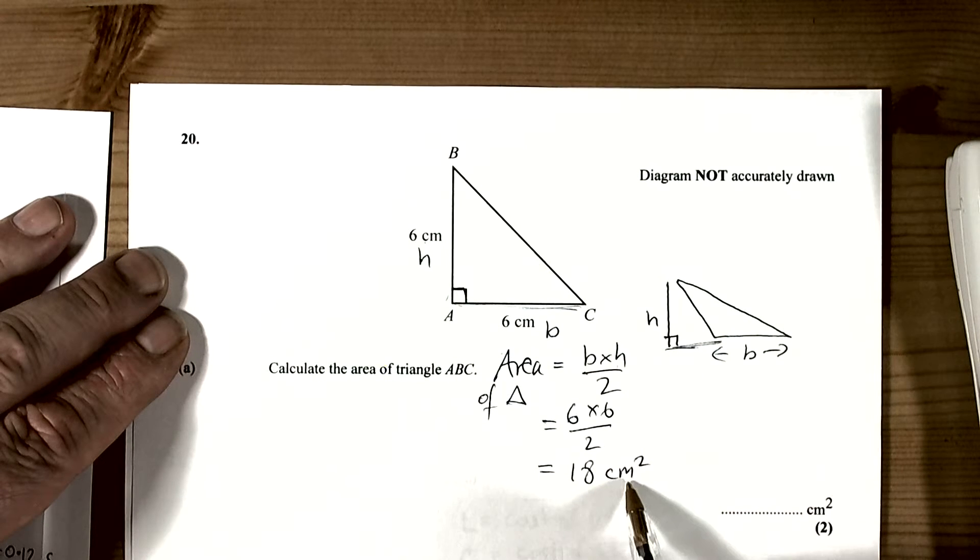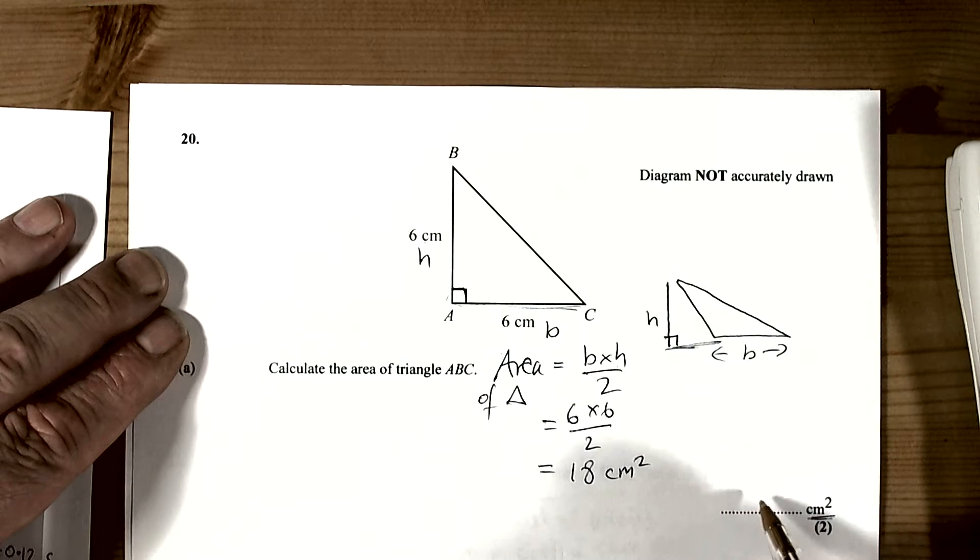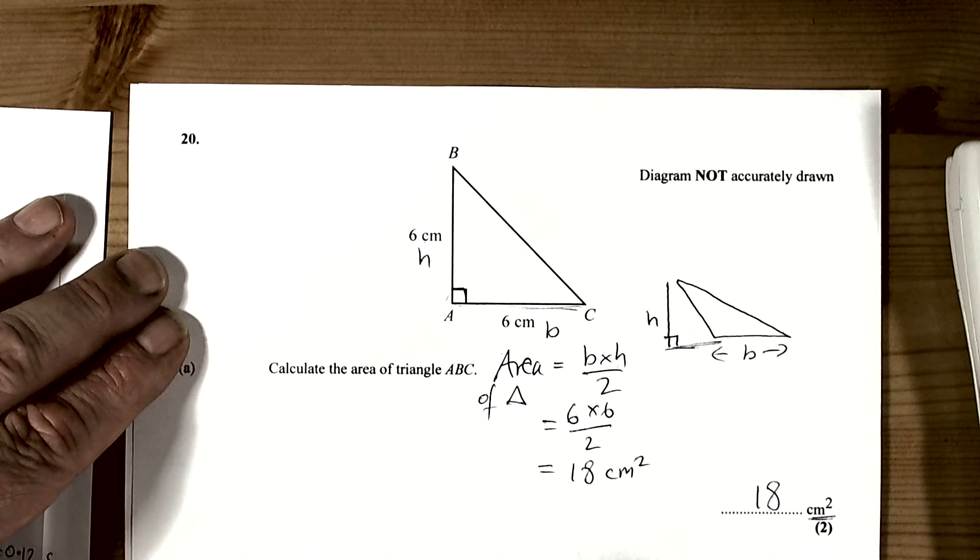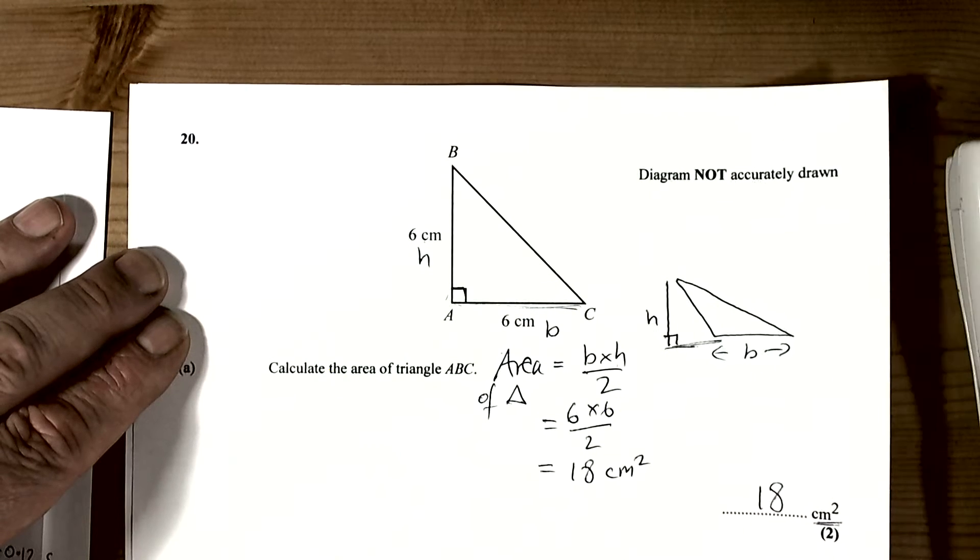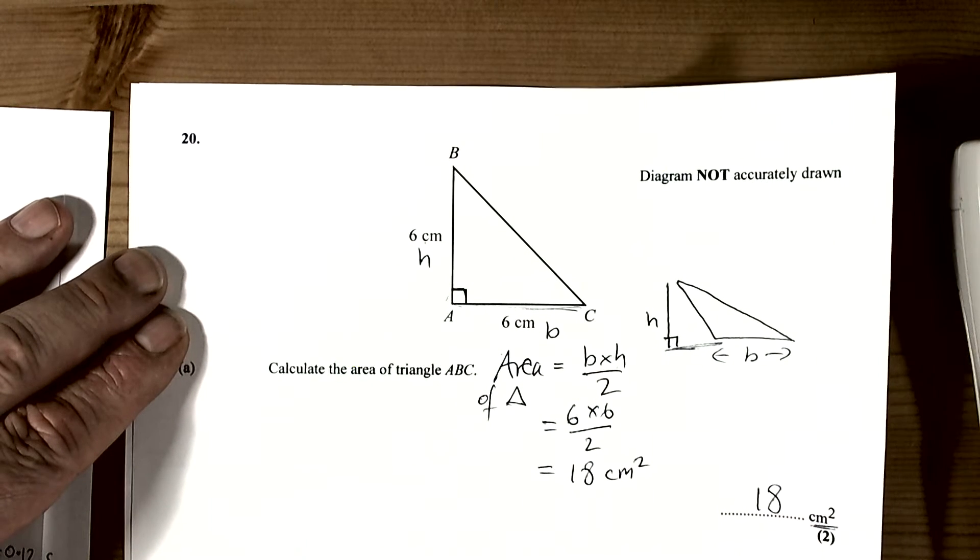And the units would be square centimetres. Always get in the habit of writing down the units just in case the question doesn't give them, because some questions won't give them and expect you to remember. So 18 square centimetres for the area of that triangle.